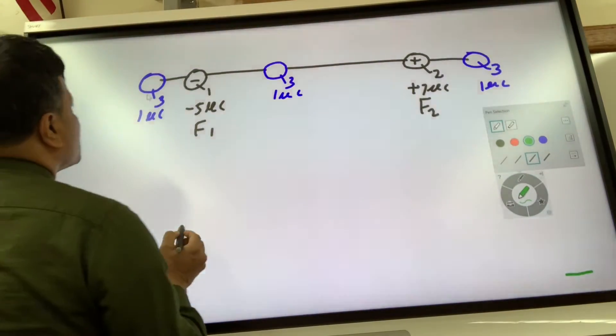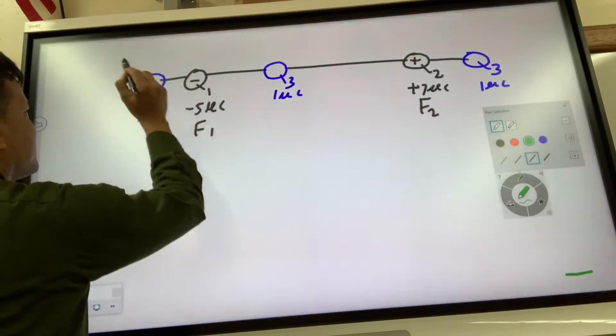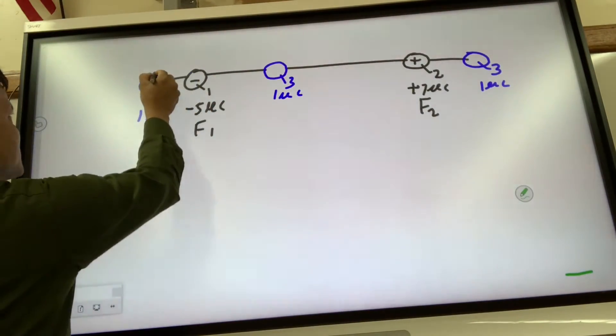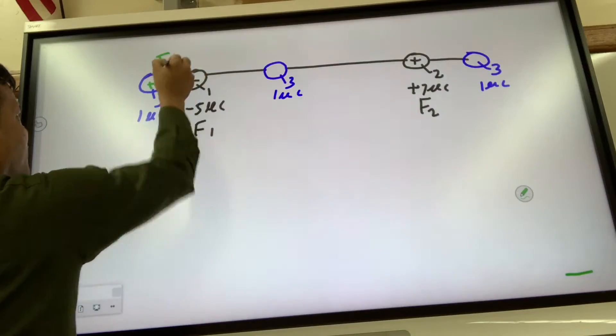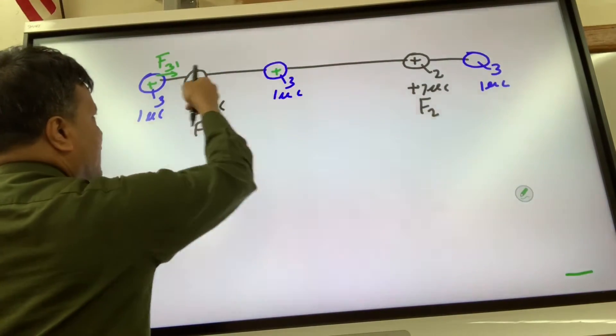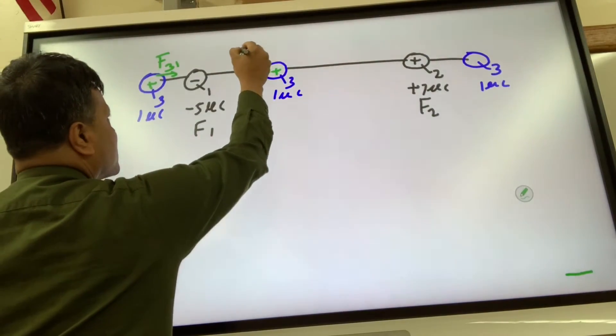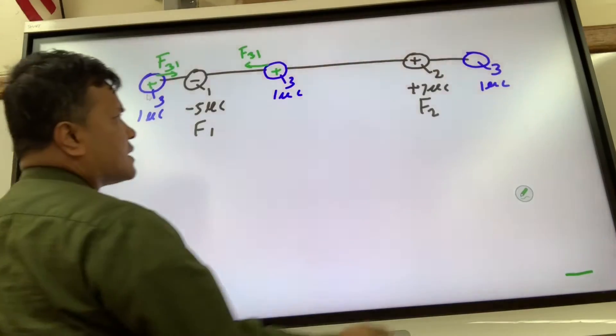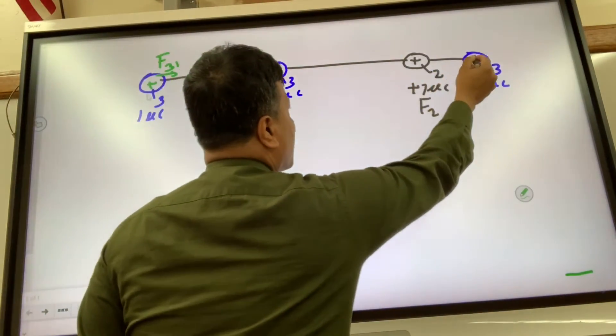This is positive and this is negative, so they attract each other. So the force on q3 due to q1: this is negative, this is positive, so they attract each other.